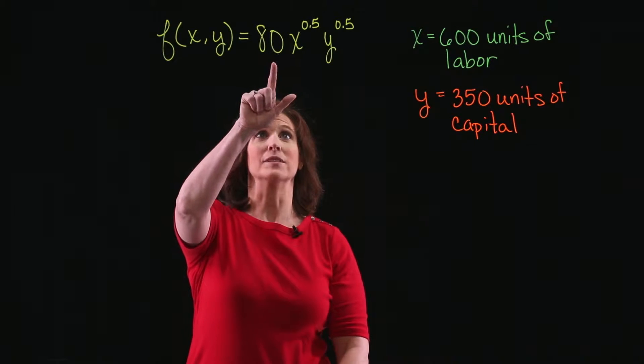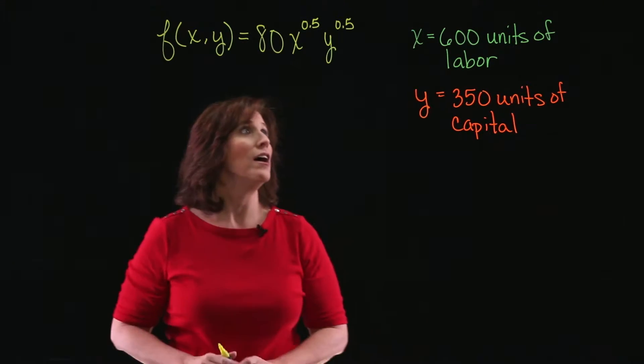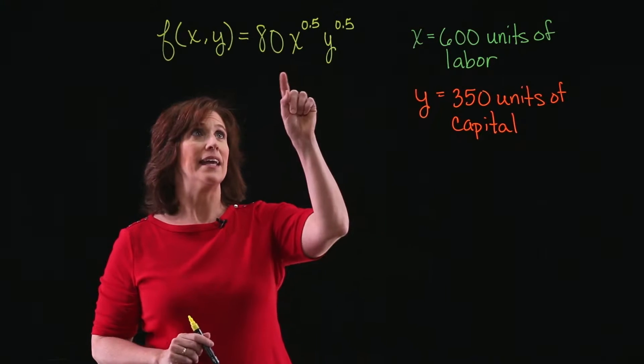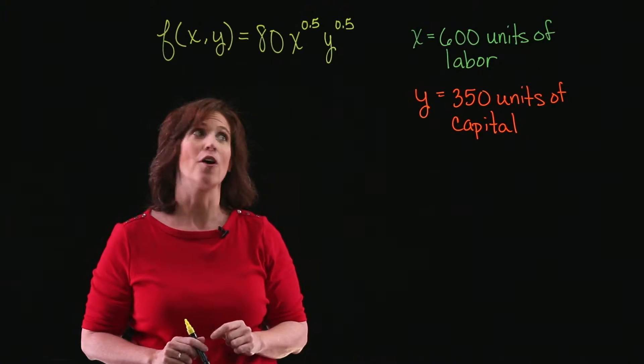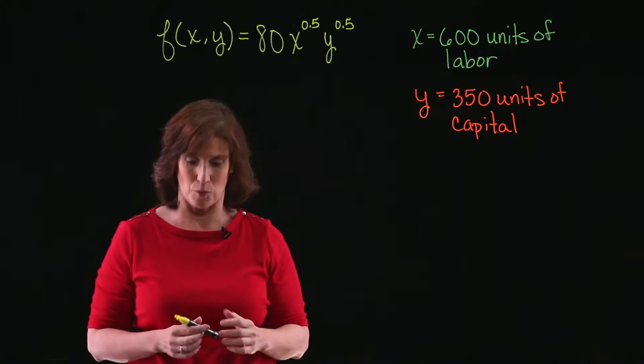So in this particular example, we know that f of xy equals 80 times x to the 0.5 y to the 0.5 power. All we're going to do is plug in 600 and 350 for our units of labor and capital, and then calculate what the production level will be.